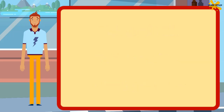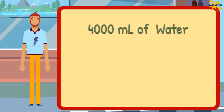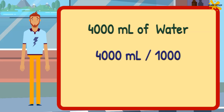Now let's do the calculation to convert milliliters to liters. I have 4,000 milliliters of packaged water. To get the value in liters, we need to divide it by 1,000. So, if we divide 4,000 milliliters by 1,000, we get 4 liters.